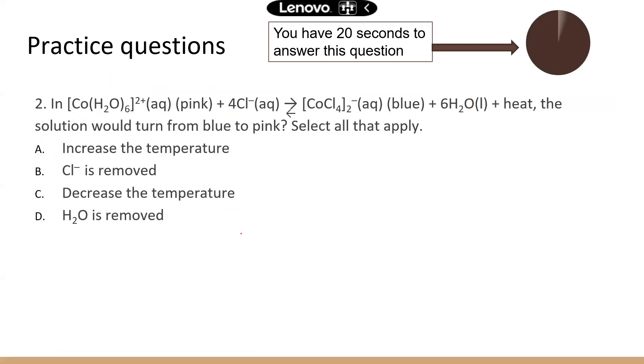Next question. This one is a little bit complicated because first I'm using color to indicate which direction I want to go. And second, the answer has both temperature and chemical concentration. So let's see. The solution would turn from blue to pink.